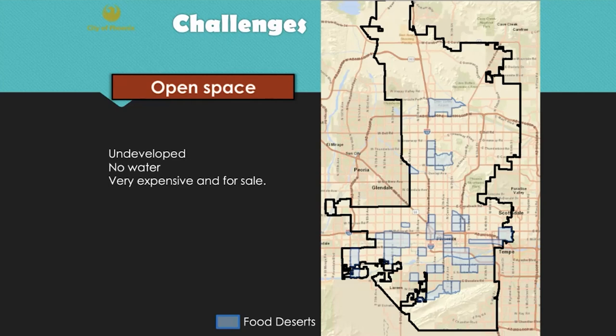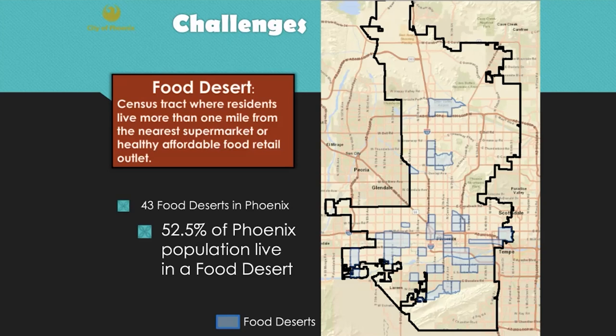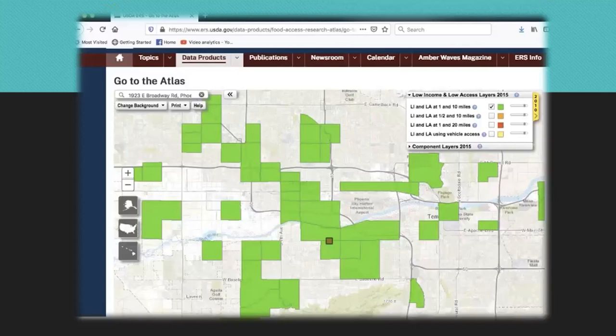We have a lot of food deserts. Food deserts are tracts where residents live more than one mile from the nearest supermarket and healthy, affordable food retail outlet. We have 43 food deserts in Phoenix, and 52% of our 1.6 million people live in a food desert. That is a challenge.